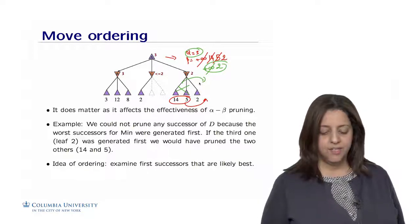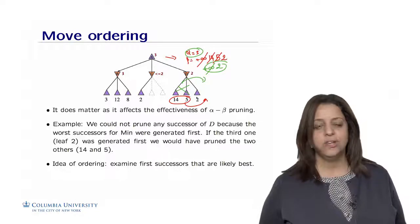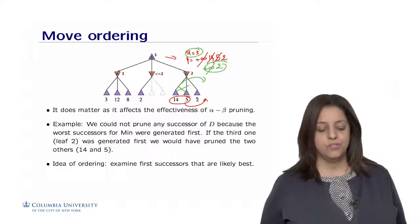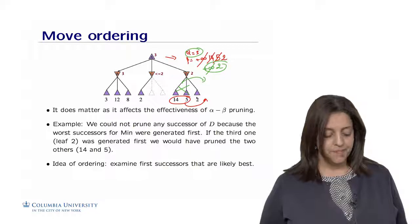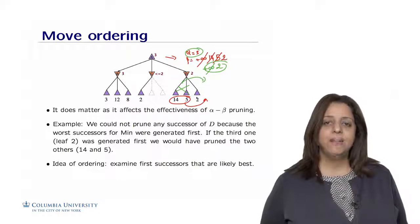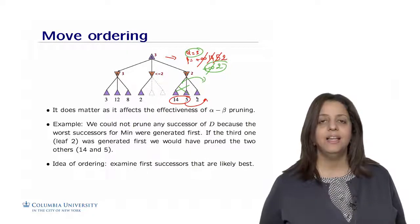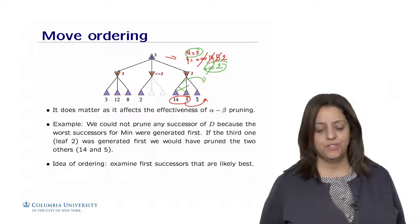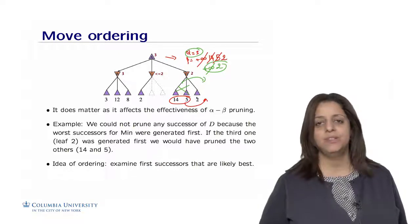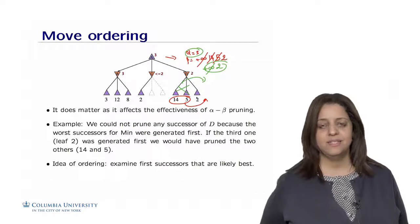If the third one, the leaf 2, was actually generated first, we would have pruned the two others, 14 and 5, earlier. So the idea of ordering is to examine the first successors that are likely best and explore those first. Chances are that you are going to get the best first, and then you are going to prune a large space in the tree.